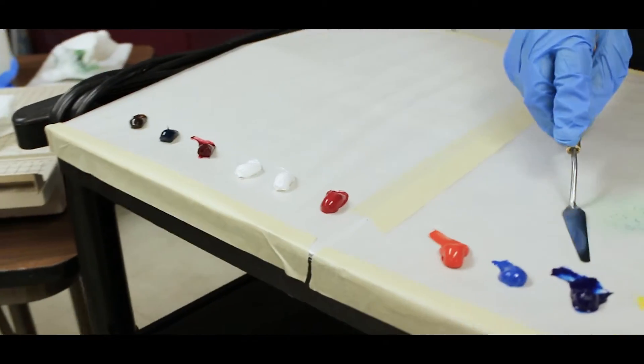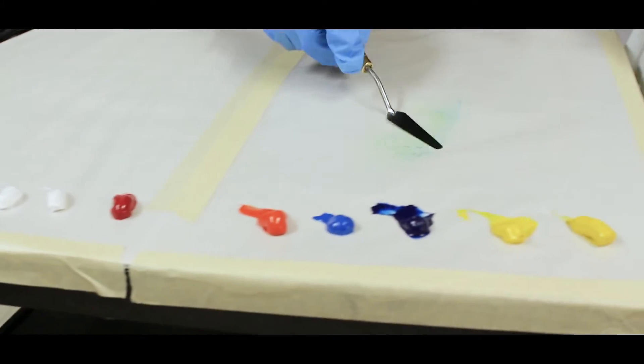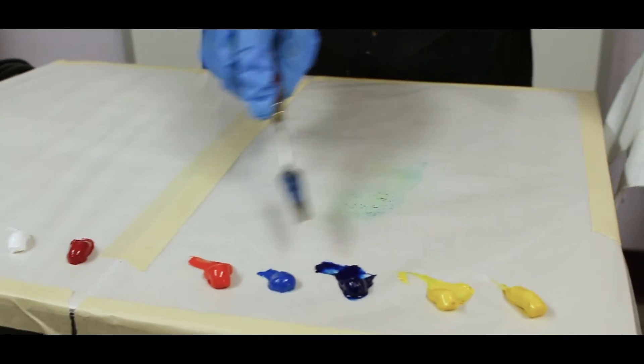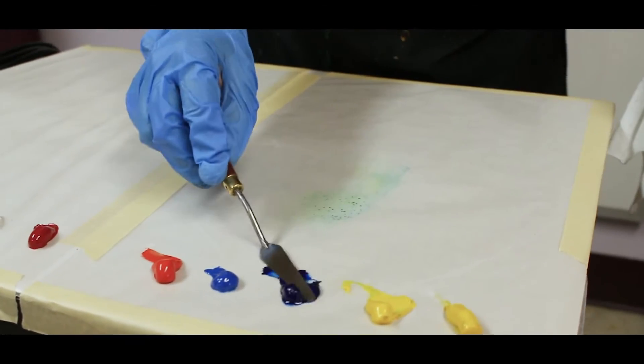I'm going to use thalo blue and primary yellow to show you green and then a different green, cerulean blue and yellow. Here we go.